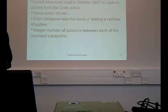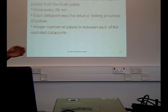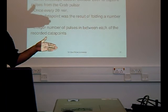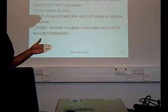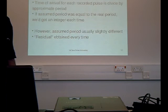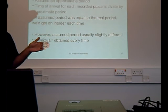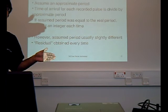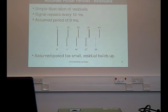The Lovell telescope was used in October 2007 to capture pulsars from the crab pulsar. Pulsars were recorded once every 20 minutes. Now, each data point was a folded signal, but we don't need to worry about that. What we do know is there were pulsars at those 20-minute intervals. And if we divide that by the period of the pulsar, we expect to have an integer number of pulsars in between. However, we assumed an approximate period, and if we divide the time of arrival for each of these 20-minute-separated pulsars, we don't get an integer number. We get an integer with a little bit left over. That's called a residual.